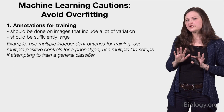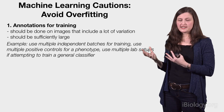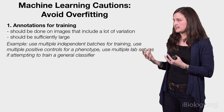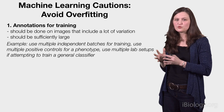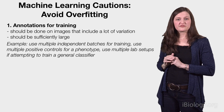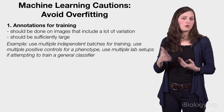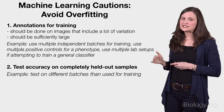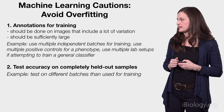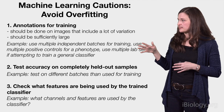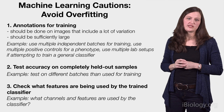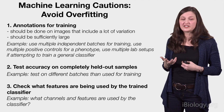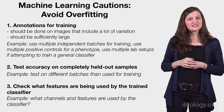So, hopefully those examples make these tips more clear. First, when creating annotations for your training set, use images that include a lot of variation and a sufficiently large set — multiple independent batches, multiple positive controls, and multiple lab setups if your goal is a broadly applicable classifier. Second, test accuracy on completely held-out samples, such as a different batch than used for training. Third, check what features the trained classifier is actually using — what channels and features it reads for your phenotype of interest — and ask whether they make biological sense. I hope you'll check out the best practices part of our video series.